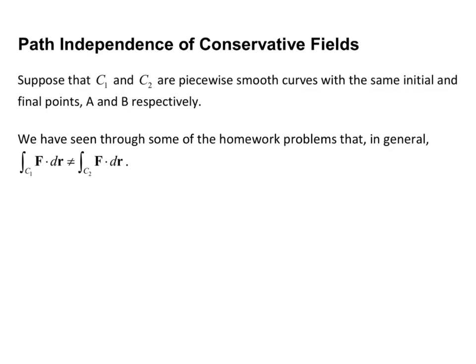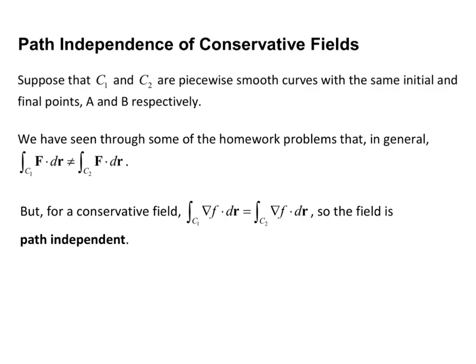Now in the case of a conservative field, we know that our line integral only depends on the starting and ending point of the path. So for a conservative field, the line integral over C1 of del f dot dr equals the line integral over C2 of del f dot dr. The field is path independent, meaning if you have the same starting and ending point of two different curves, you will get the same line integral — if your vector function can be written as the gradient of some function.